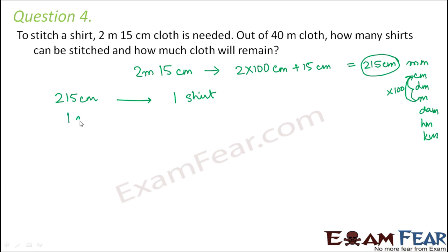So in one centimeter, you will be able to stitch one by 215 shirts. And therefore in 40 meters of cloth. Now 40 meters means how many centimeters? That will again be 40 into 100 centimeters. That is 4,000 centimeters. So therefore in 4,000 centimeters, you will be able to stitch one by 215 into 4,000 shirts.